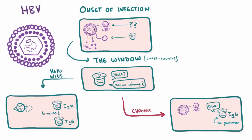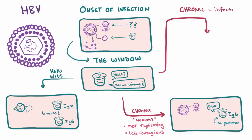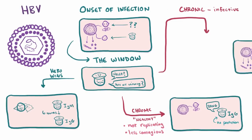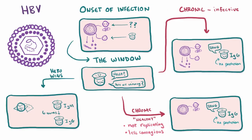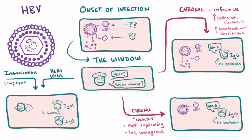When chronic, the host could present as relatively healthy with the presence of surface antigen and core antibody but no DNA or E antigen — meaning the supervillain is there but not replicating, so the host is contagious but at lower risk. The other option is that they're infective, with the whole villain force active and an overwhelmed immune response. This state increases the risk for post-necrotic cirrhosis and hepatocellular carcinoma. Immunization skips these steps and gets you directly to the IgG anti-surface antibody.